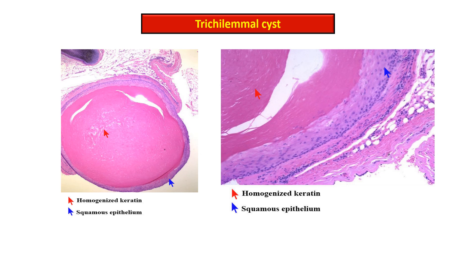If there is a rupture of the cyst wall, there is evidence of inflammation and granulomatous reaction.